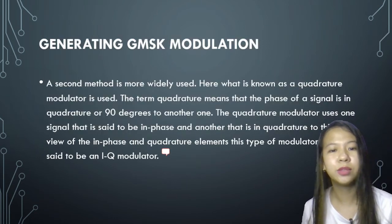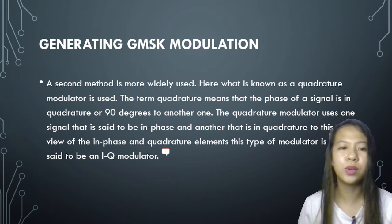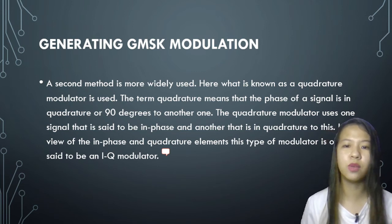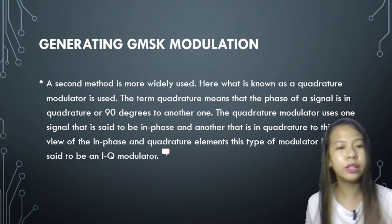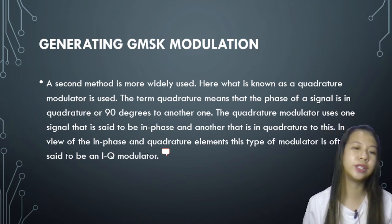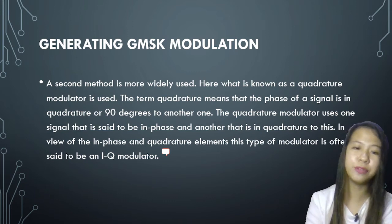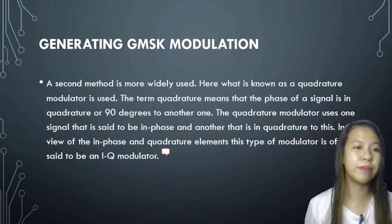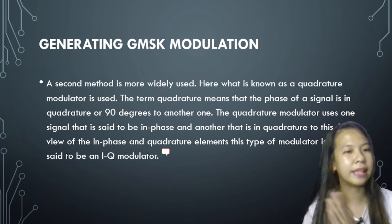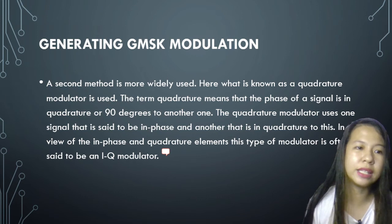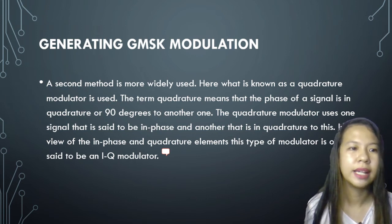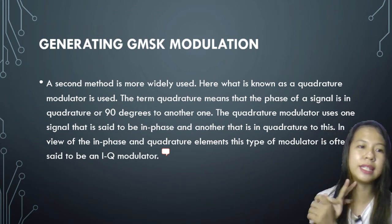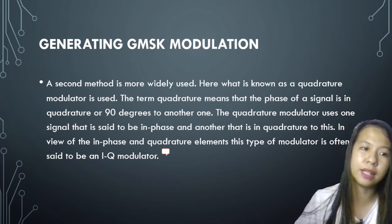Next, the second method is more widely used. Here, what is known as a quadrature modulator is used. The term quadrature means the phase of a signal is in quadrature or 90 degrees to the other one. The quadrature modulator uses one signal that is said to be in phase and another that is in quadrature to this. In viewing the in-phase and quadrature elements, this type of modulator is often said to be an IQ modulator. Using this type of modulator, the modulation index can be maintained at exactly 0.5 without the need of any settings or adjustments. This makes it much easier to use and capable of providing the required level of performance without the need of adjustments. For demodulation, the technique can be used in reverse.